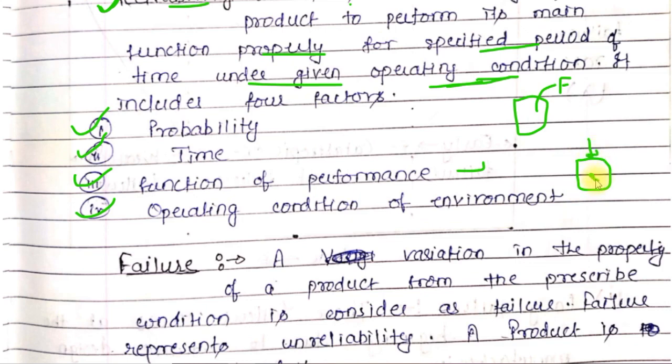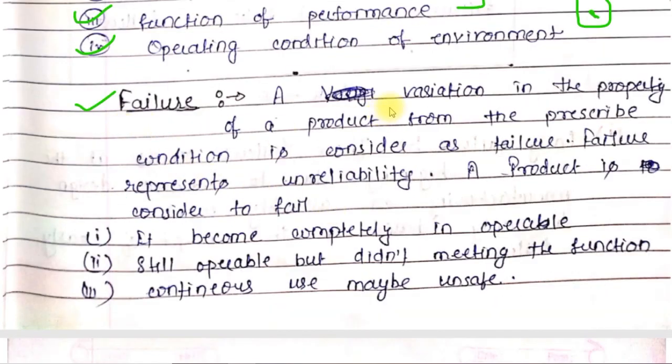Now let's look at failure. A variation in the property of a product from the prescribed condition is considered as a failure. If you take any product and it has a specified function and specification, but it doesn't fulfill the purpose for which you purchased it, then the product has failed.